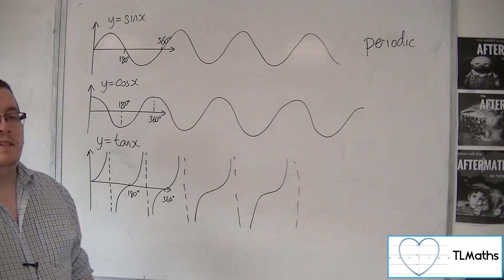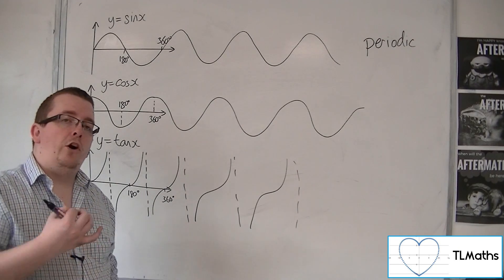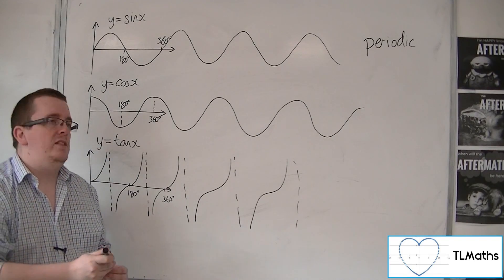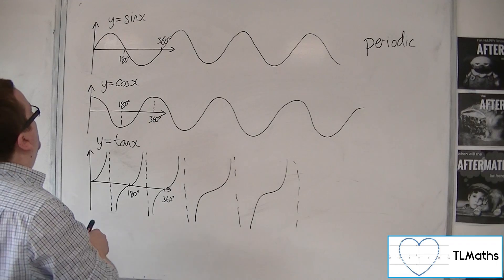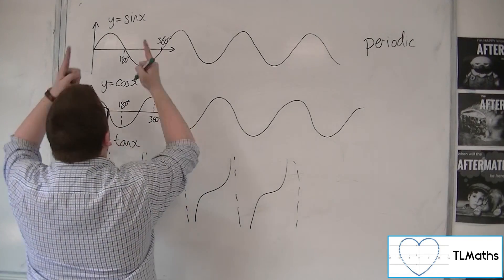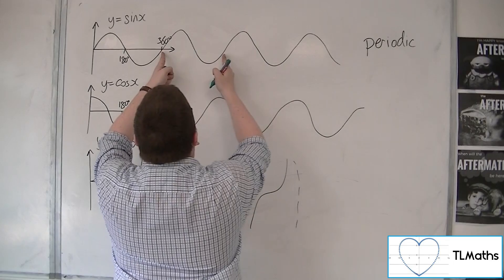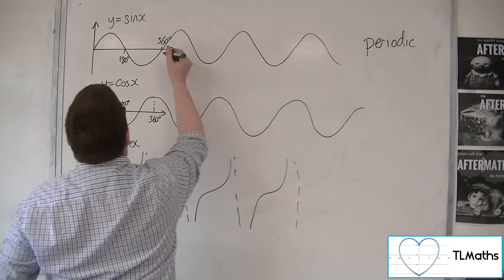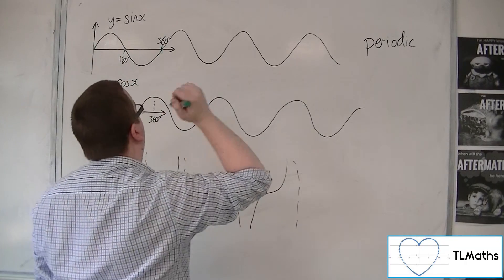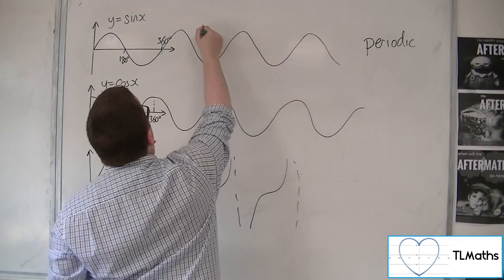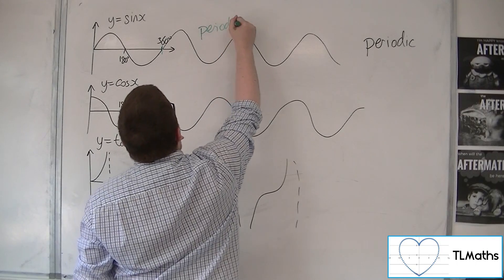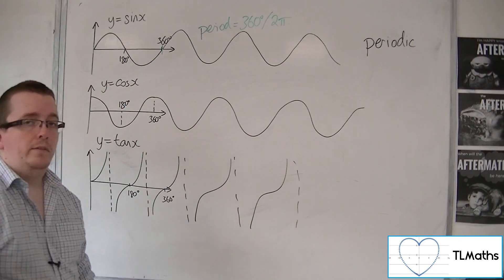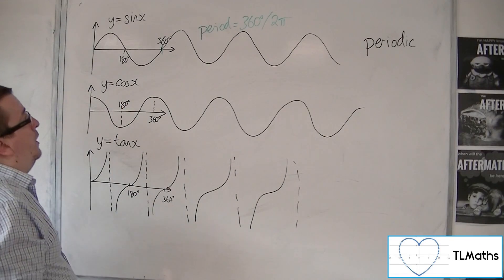It's important that you can identify the period of each of these functions — so over what distance do they repeat themselves. Well, sine x repeats itself every 360 degrees. So the period of sine x is 360 degrees or 2 pi radians. It repeats itself over that distance.